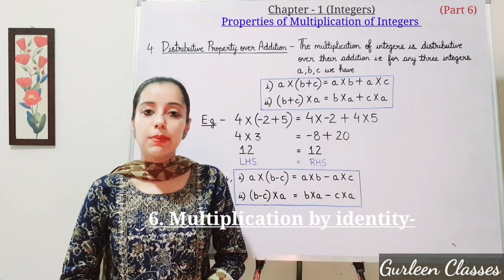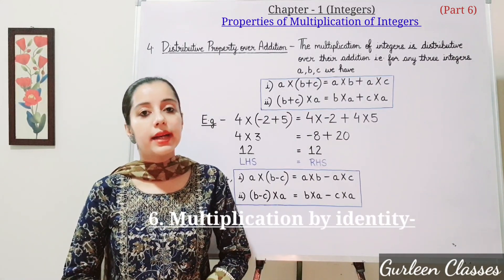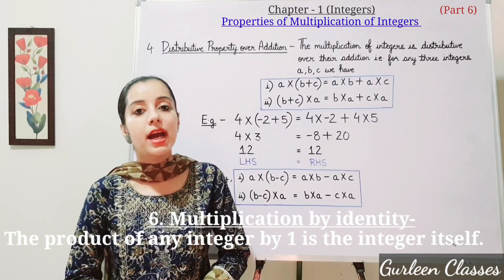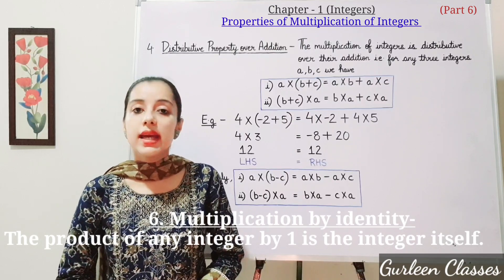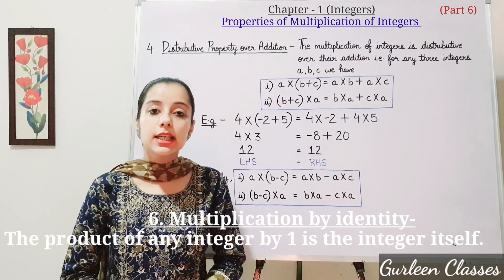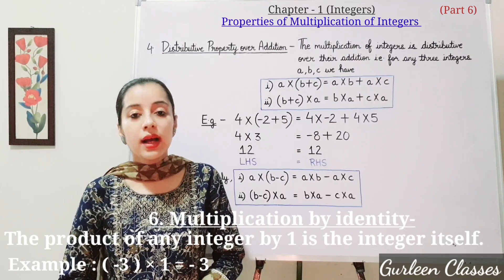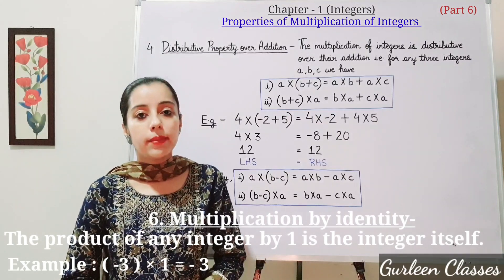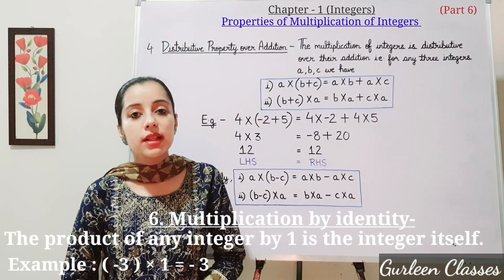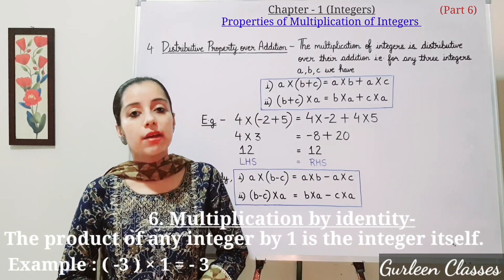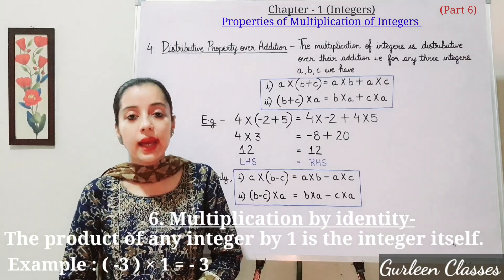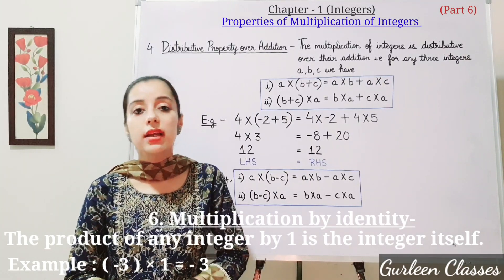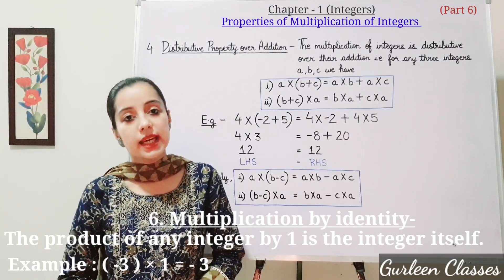Number 6: multiplication by identity. The product of any integer multiplied by 1 is the integer itself. Example: minus 3 into 1 gives minus 3. If we multiply any integer by 1, the answer remains the same.